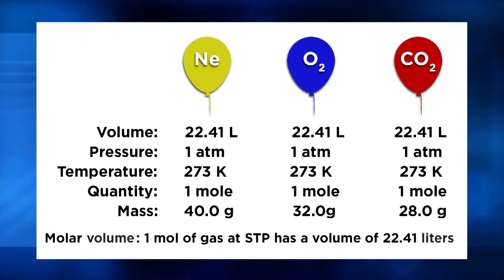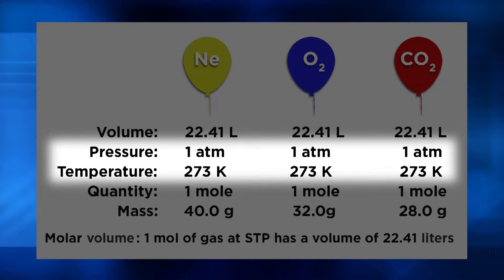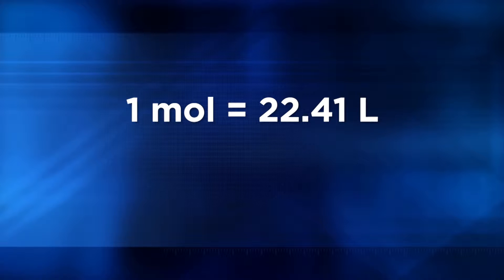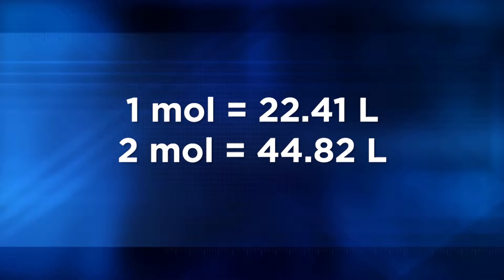It doesn't matter which gas you're measuring, as long as the gas is held at standard temperature and pressure. Because the molar volume of any gas at standard temperature and pressure always equals 22.41 liters, we can use that equivalent statement as a conversion factor. For example, if one mole of gas has a volume of 22.41 liters at STP, you can easily calculate that two moles of gas at STP have a volume of 44.82 liters — twice as large.